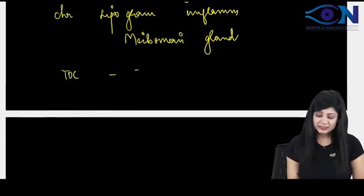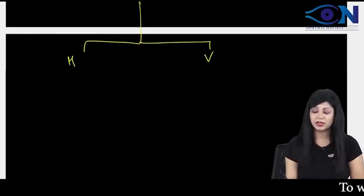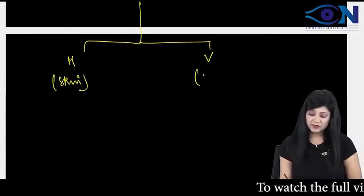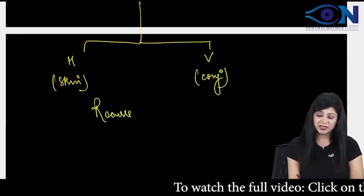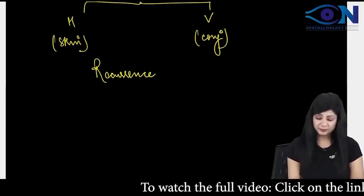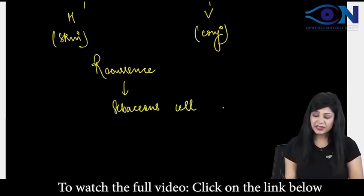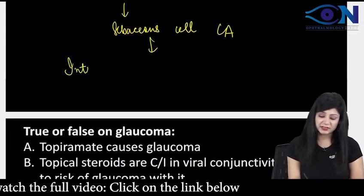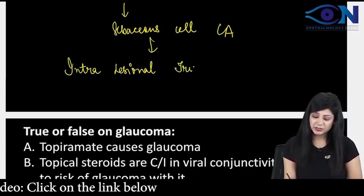The treatment of choice is incision and drainage (I&D). We have two types of incision: horizontal incision given towards the skin, and vertical incision given towards the conjunctiva. If there is recurrence of the chalazion, this can lead to sebaceous cell carcinoma, and therefore the treatment given is intralesional triamcinolone.